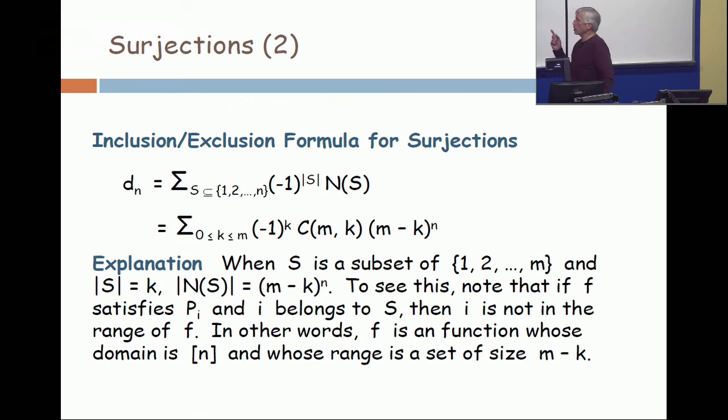So you're summing over the subsets of 1 to m, minus 1 to the k times the binomial coefficient C(m,k), and that binomial coefficient there is simply counting the number of terms at any one level. And what are those terms? Those terms come in the form m minus k to the n.